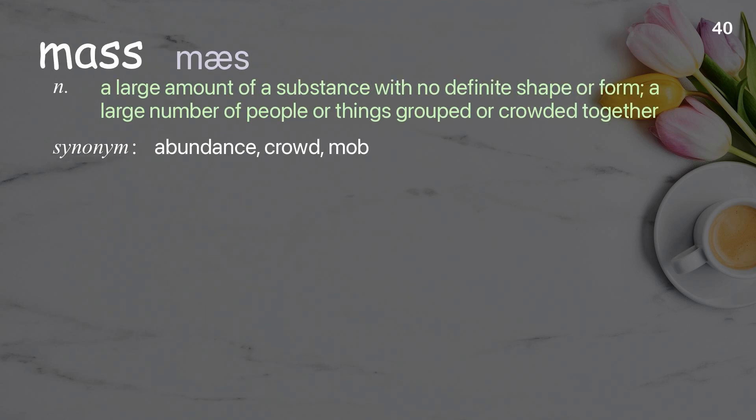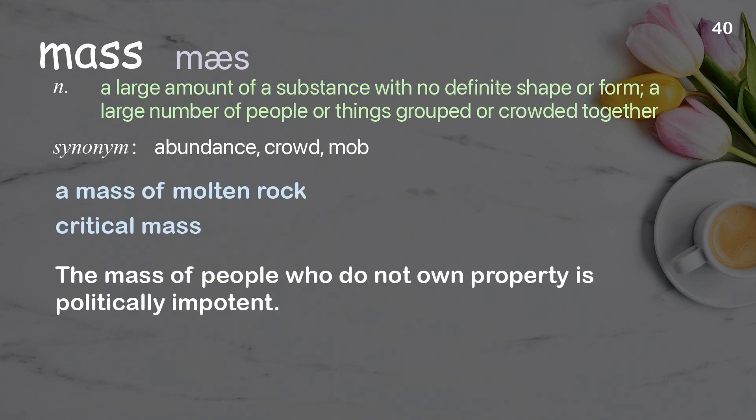Mass: a large amount of a substance with no definite shape or form; a large number of people or things grouped or crowded together. Examples: a mass of molten rock, critical mass. The mass of people who do not own property is politically impotent.